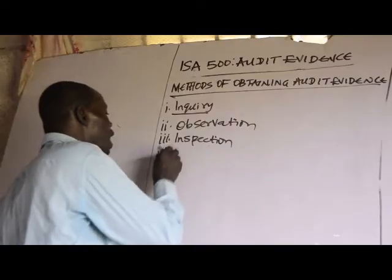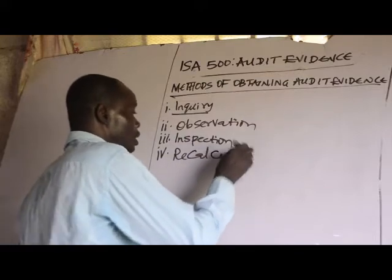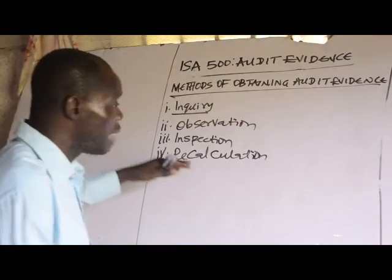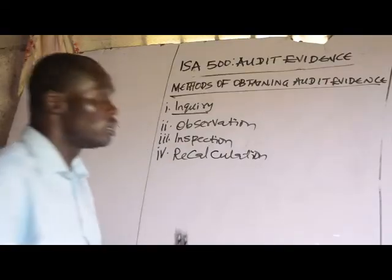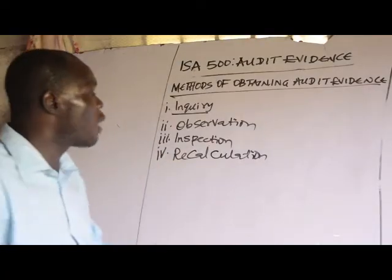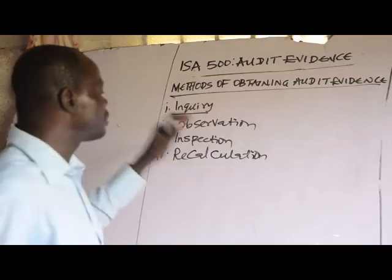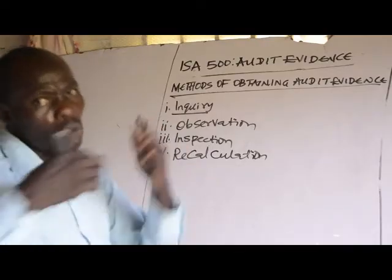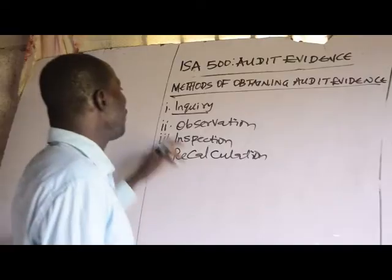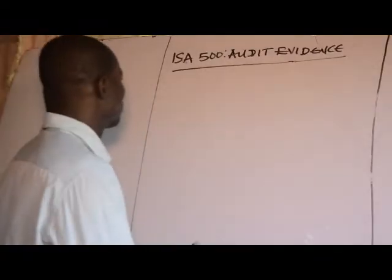Number four, the method of recalculation. To recalculate means to confirm the accuracy of what has been computed before — to ascertain the arithmetic accuracy of an earlier computation. Recalculation involves checking the arithmetic accuracy of source documents and accounting records.